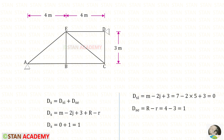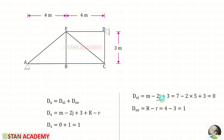First we have to find the degree of static indeterminacy. We know the formula to find that. M is the number of members: 1, 2, 3, 4, 5, 6, 7 — so M is 7. J is the number of joints: 1, 2, 3, 4, 5. For DSI we will get 0.